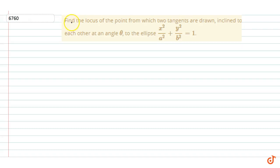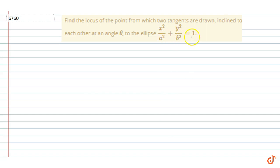In this question, find the locus of the point from which two tangents are drawn inclined to each other at an angle theta to the ellipse x²/a² + y²/b² = 1.